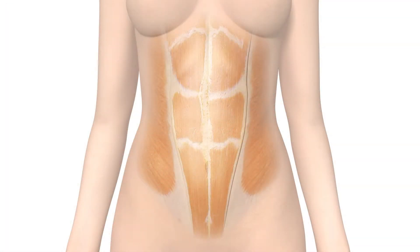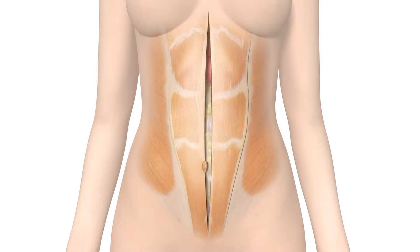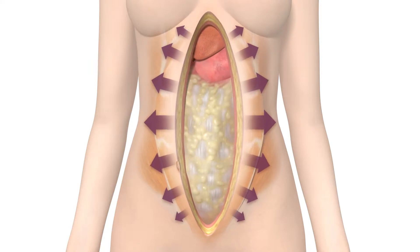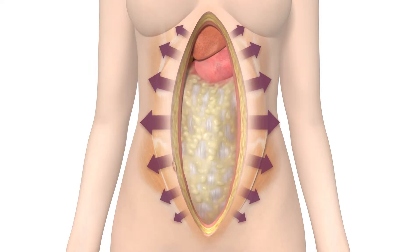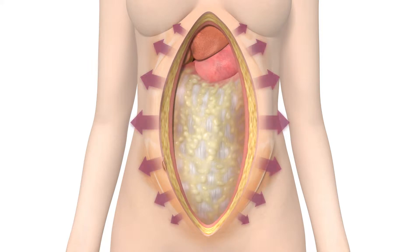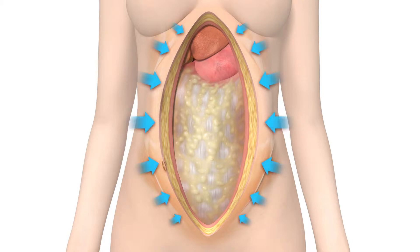In abdominal surgery, the continuity of the muscle wall is disrupted. The forces exerted by the anterolateral abdominal muscles cause the wound to retract into a stable state that becomes increasingly difficult to re-approximate. The key to closing an abdominal wound is to restore the normal elastic tension of skin and muscle with dynamic appositional forces that are applied as early as possible.